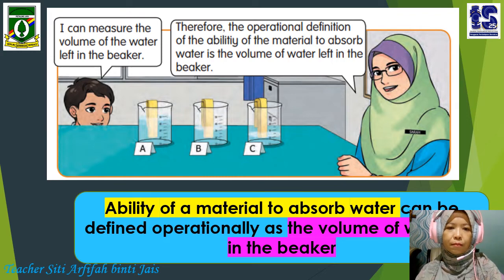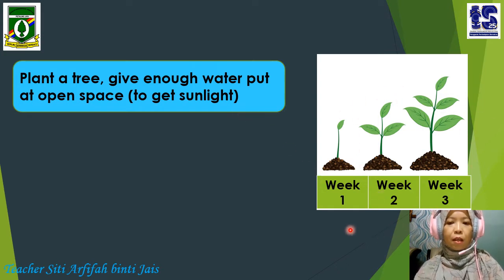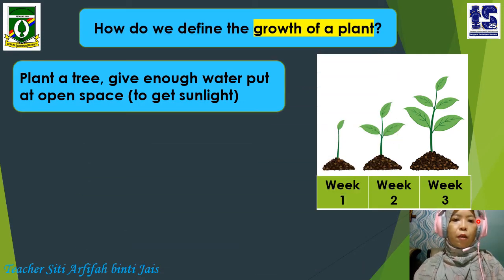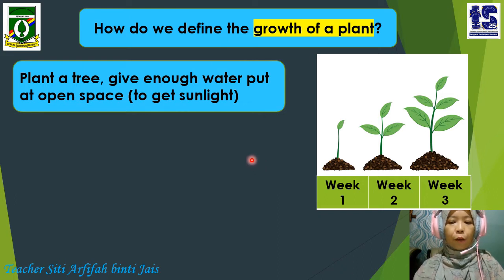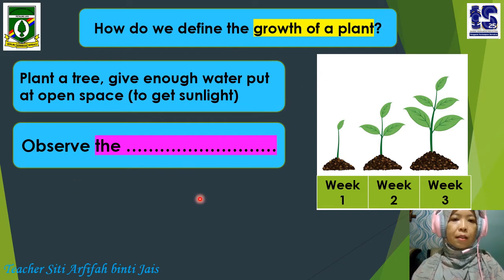Look at this situation. Plant a tree, give enough water, and put it in an open space to get enough sunlight. Observe the plant over week one, week two, and week three. First, we have to identify what we investigate — we investigate the growth of a plant. How do we define the growth of a plant? Secondly, we must identify what we can observe. We observe the number of leaves. Now that you have identified what you investigate and what you observe, let's make the operational definition of the growth of a plant.